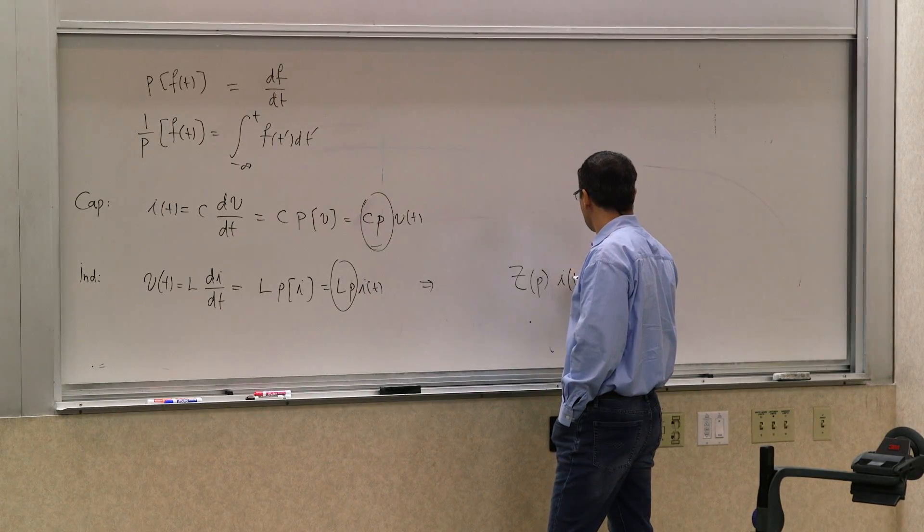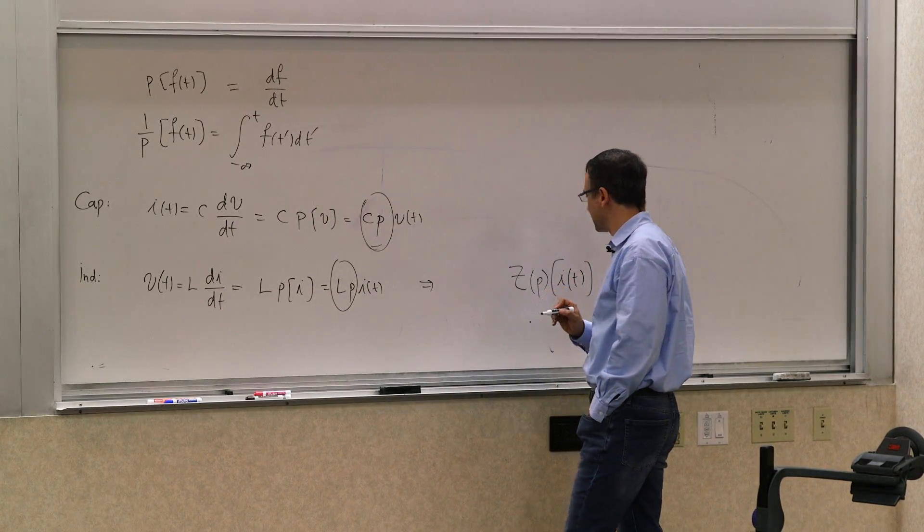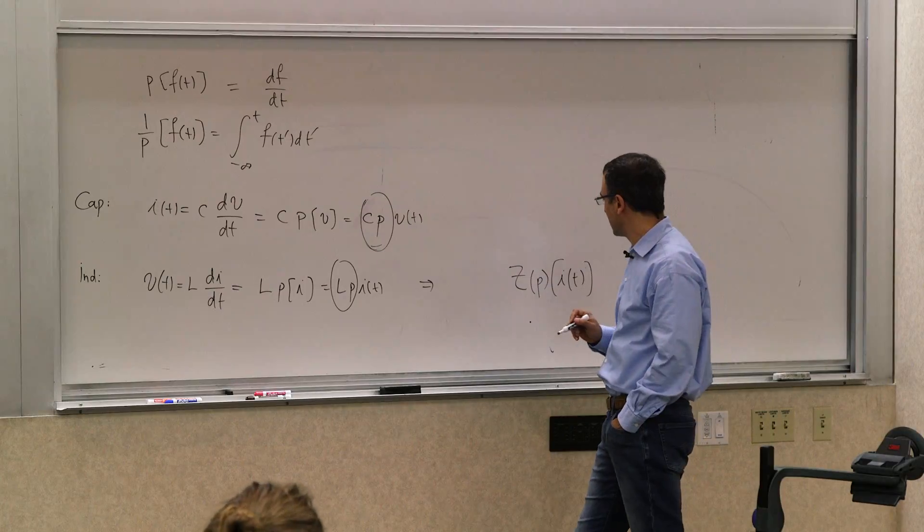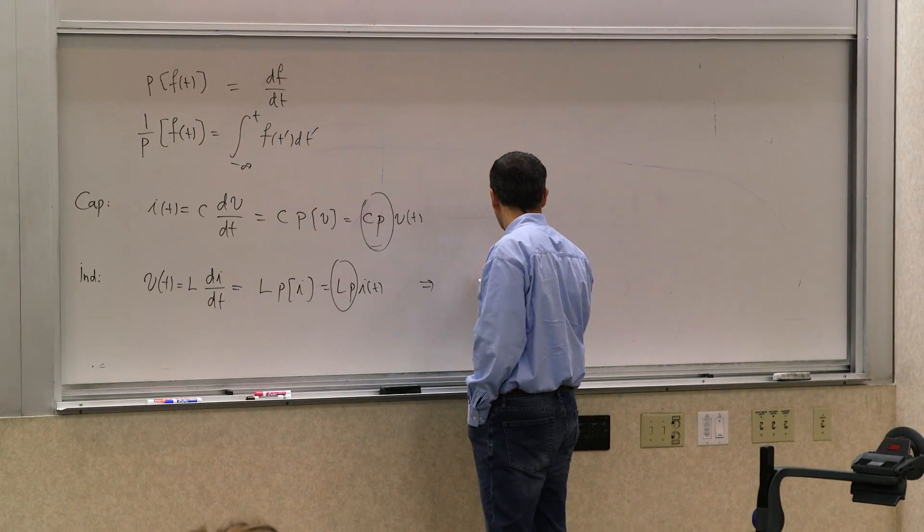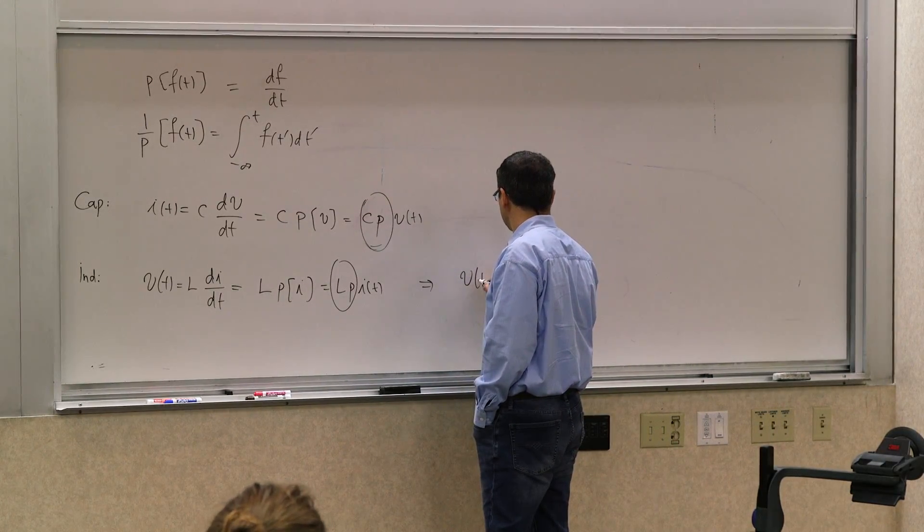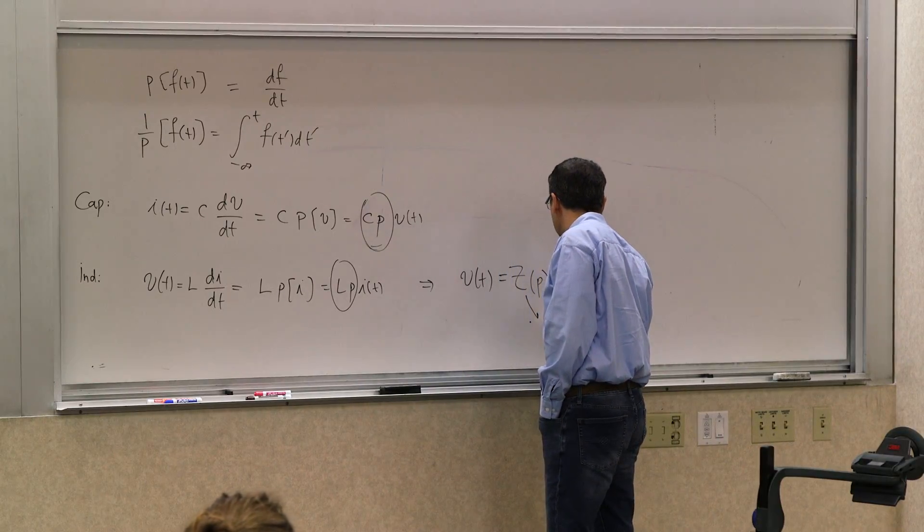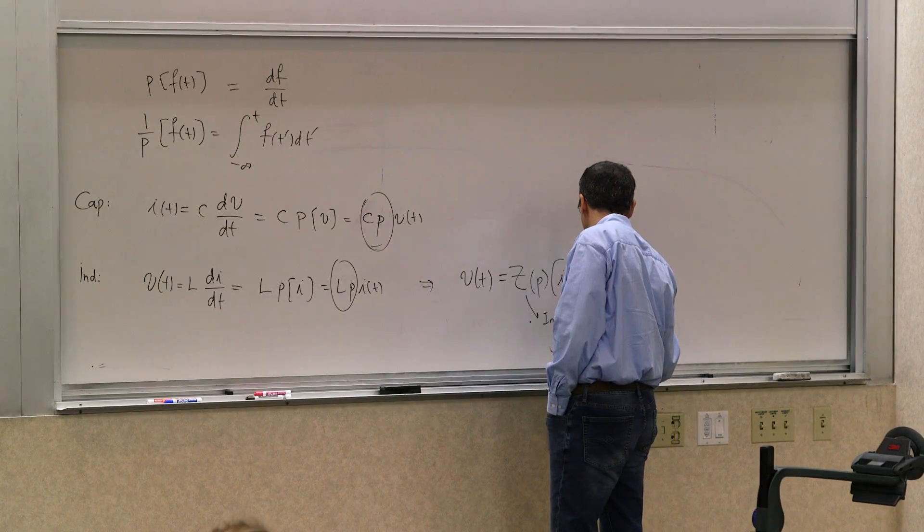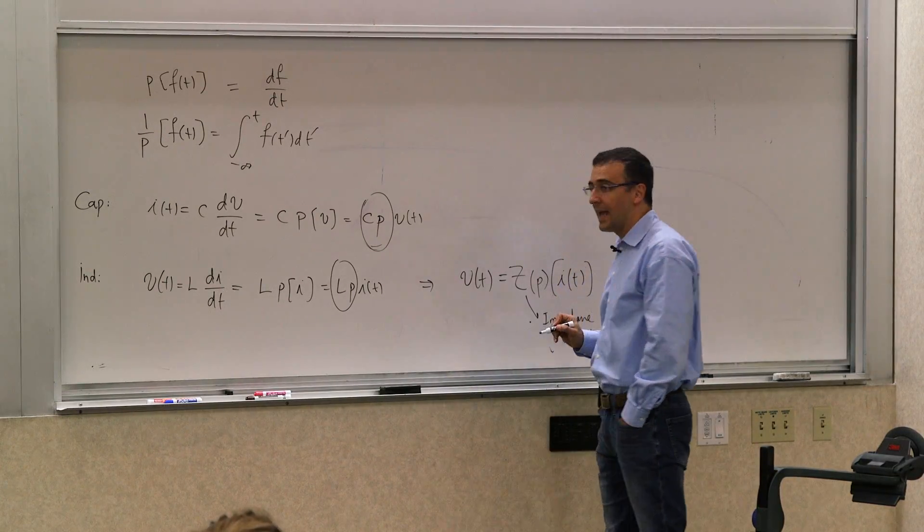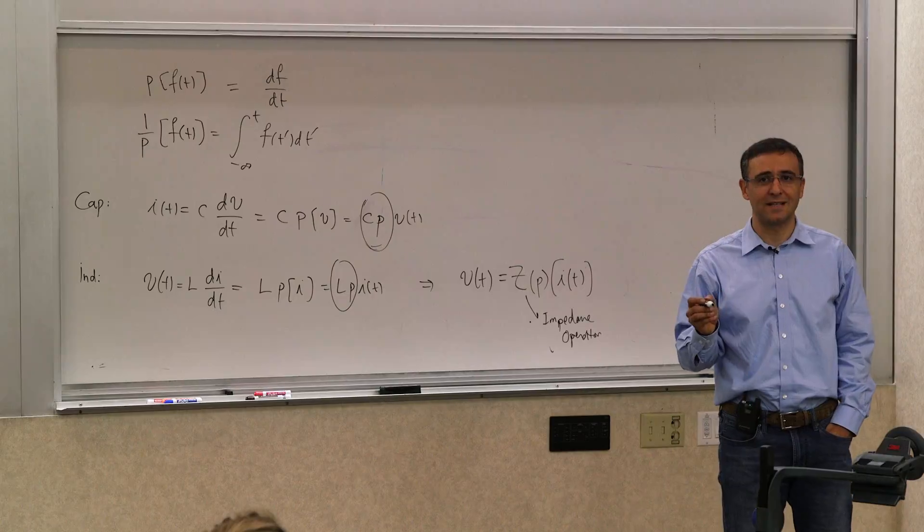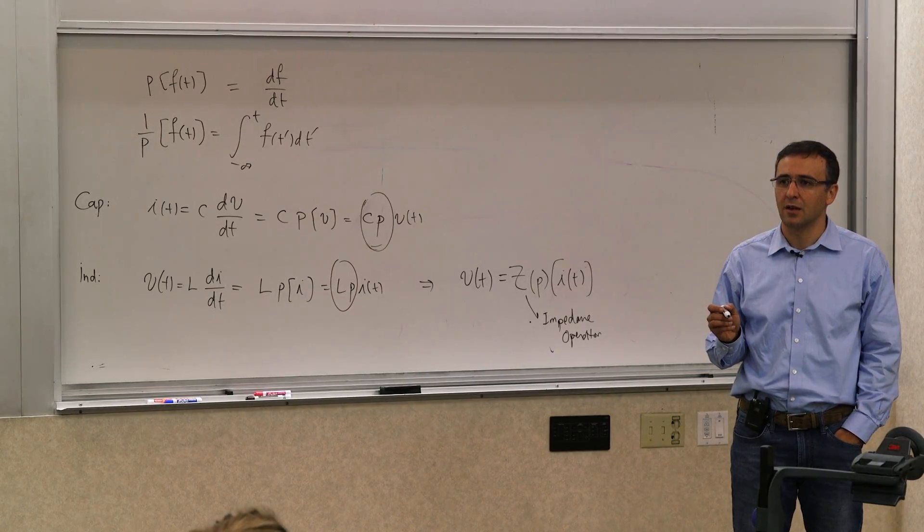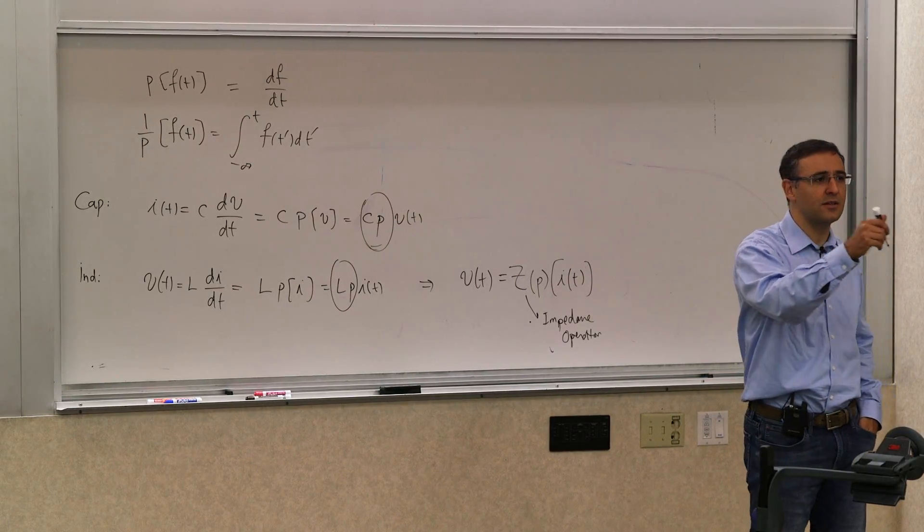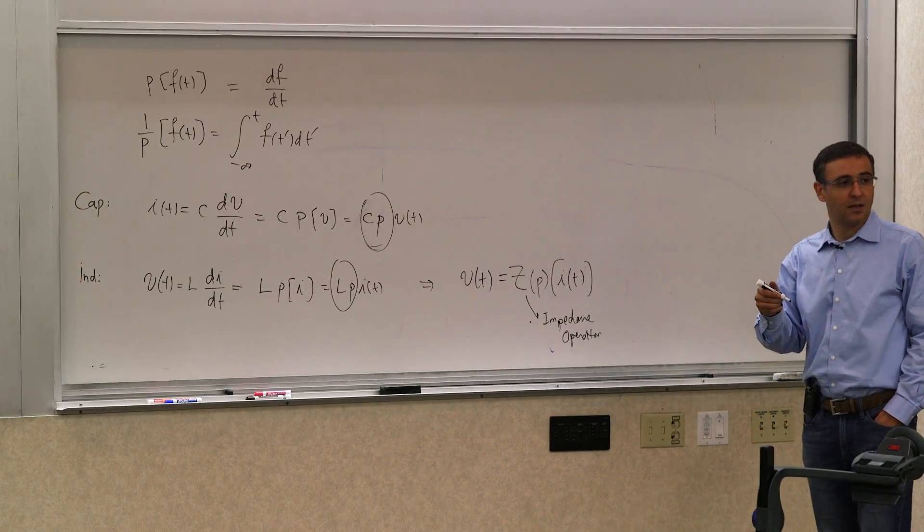An impedance operator. So in general you could write z(p), an operator operating on i. So it's really this. What I just wrote was a shorthand for that, producing v(t). This is called an impedance operator.